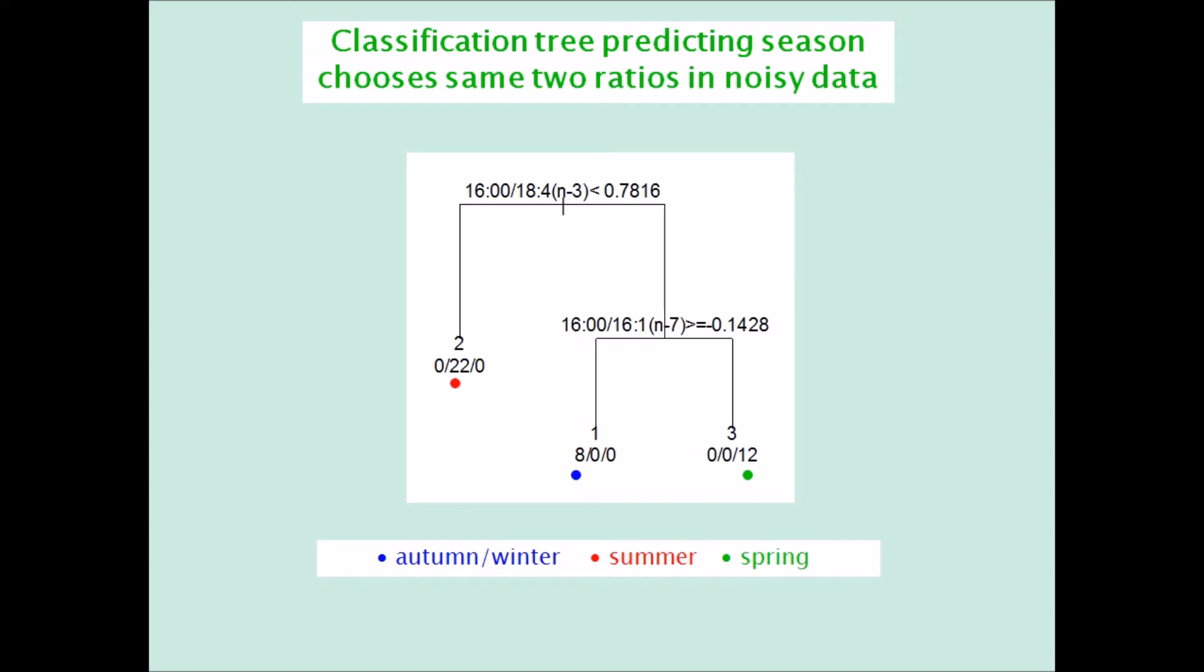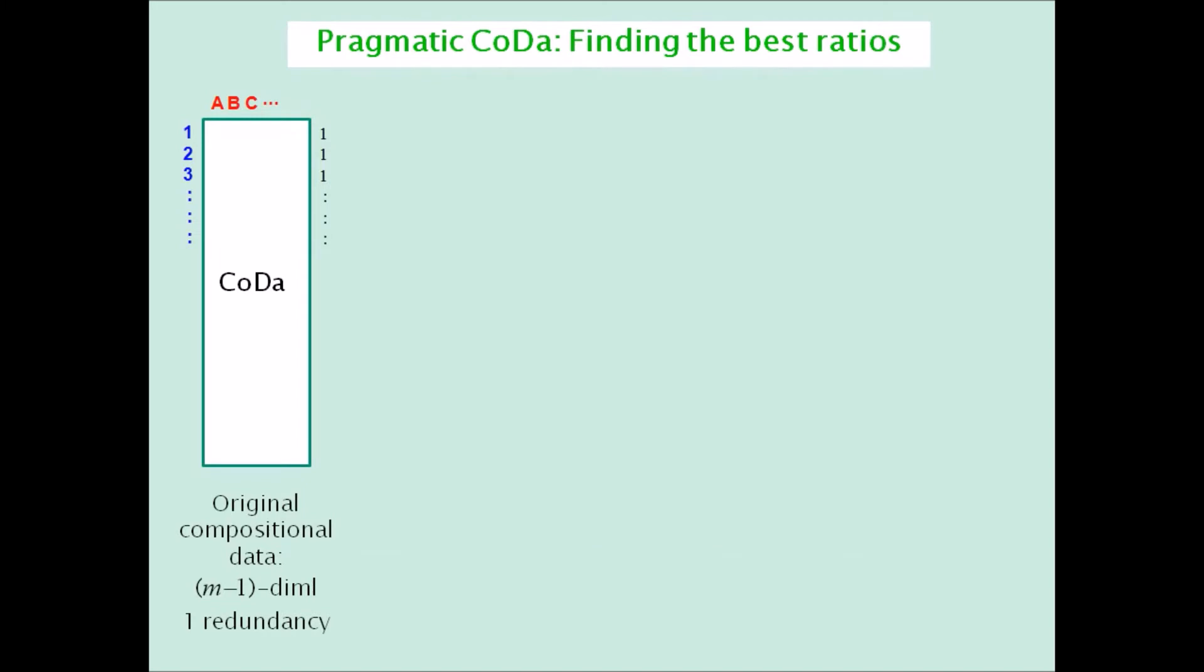But let's go back to the original unpermuted data, which has m parts. But because it is compositional, it is m-1 dimensional and has one redundancy.